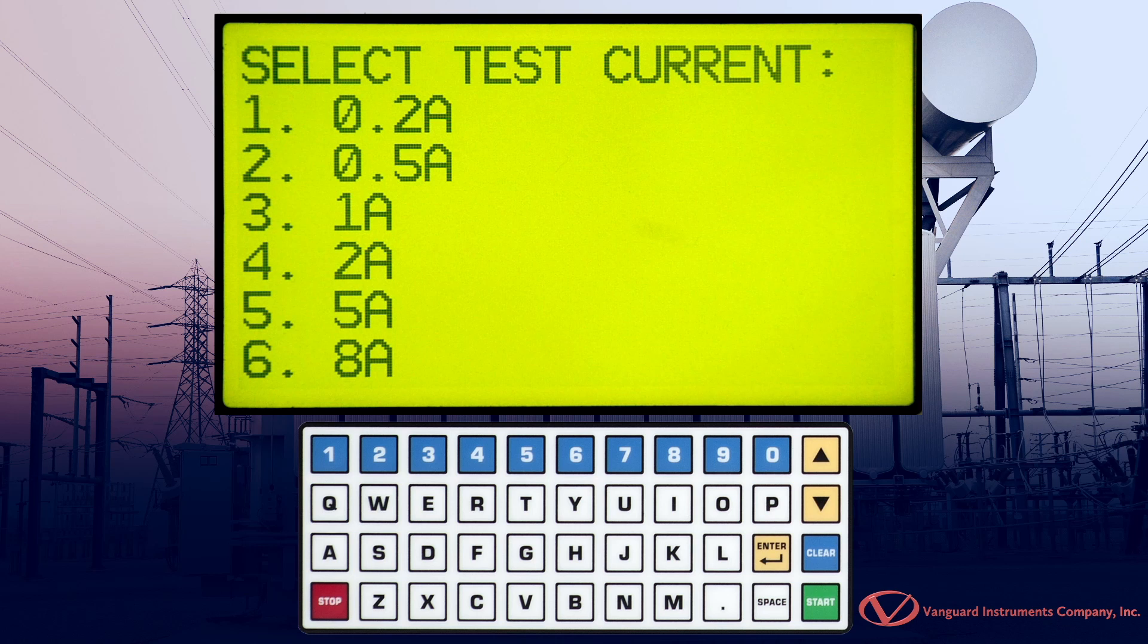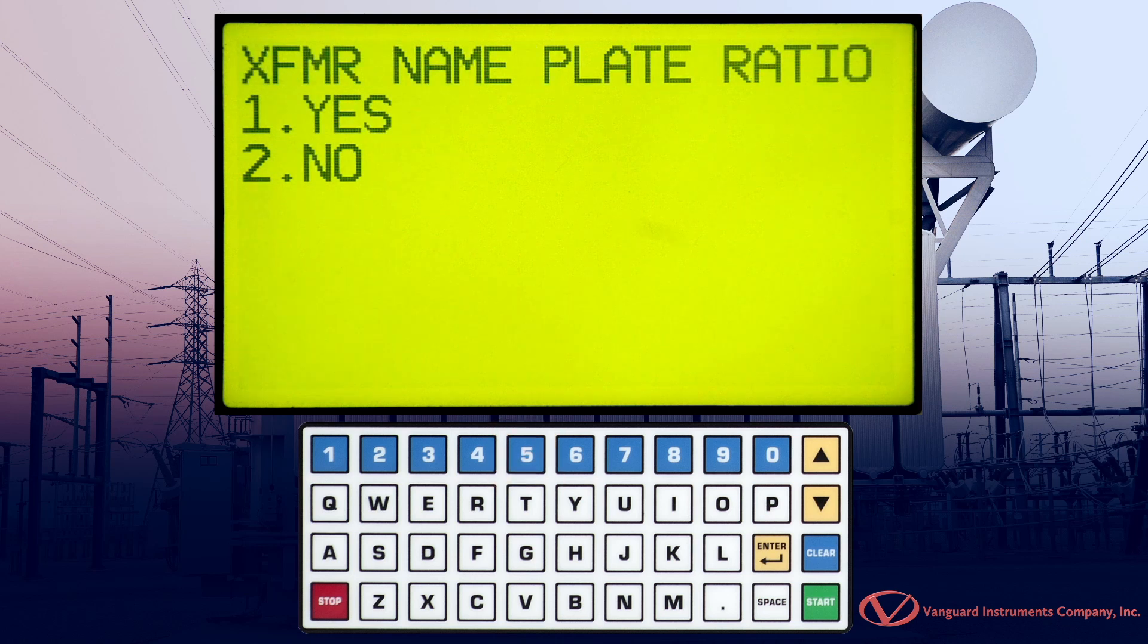Now, select the test current. We'll press the 5 key for 5 amps. Since our tests include a ratio test, we can enter the nameplate ratio if the values are known. We'll press the 1 key for Yes.